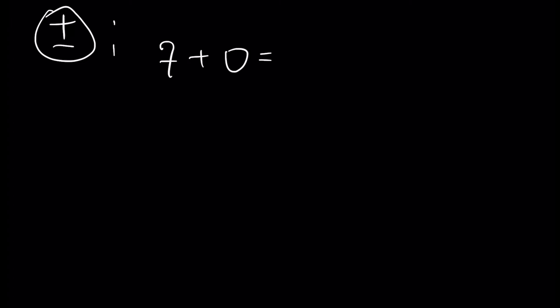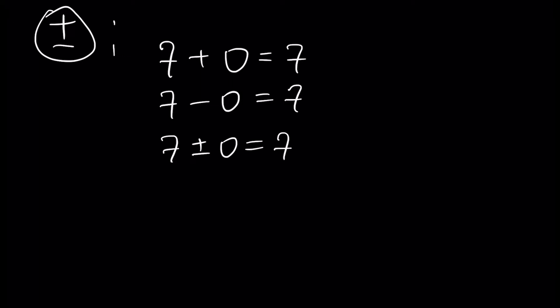First, let's talk about addition and subtraction, denoted as plus and minus. Adding and subtracting zero to any number gives the same number. For example, seven plus zero is seven, and seven minus zero is also seven. We can write it as: seven plus or minus zero equals seven. Any number, like two and one-third, plus or minus zero, will be the same number.